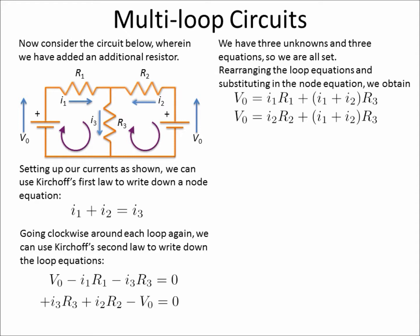V0 is equal to I1R1 plus (I1 plus I2) times R3, so this is the current over there times R3. And V0 is equal to I2R2 plus I3 times R3.